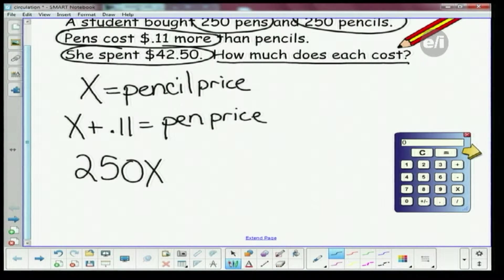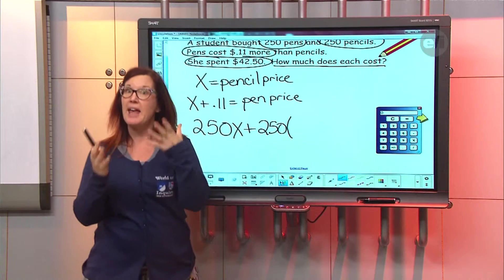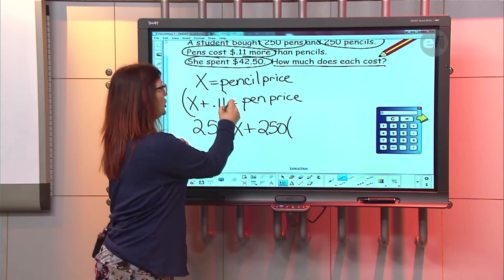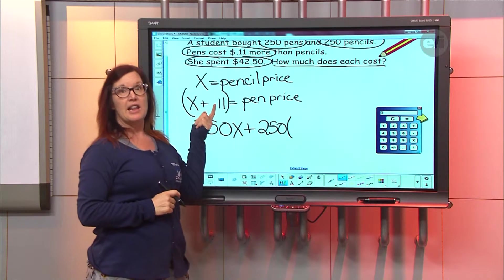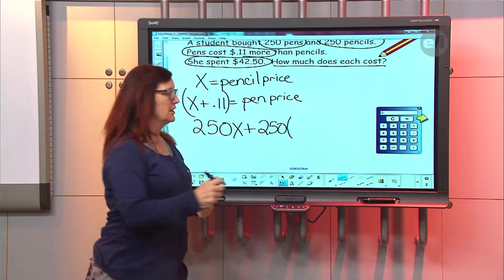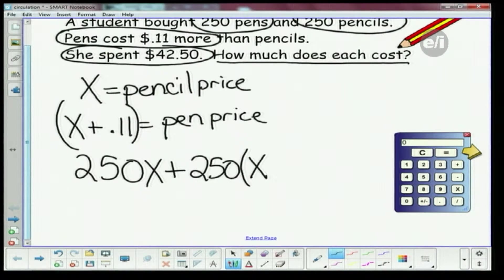Right, we could have used a P, but we'll just go with an X. That's 250 pens. And then how am I going to say 250 pencils? How am I going to talk about the pencil price? What do we say the pens - I'm sorry, the pens - what do we say the pens were going to be? 250 of them, but they're the price of a pencil plus 11 cents, right? So it's 250 times, and I'm going to put this whole thing in parentheses, X plus point 11.